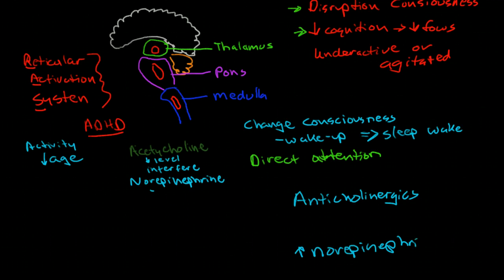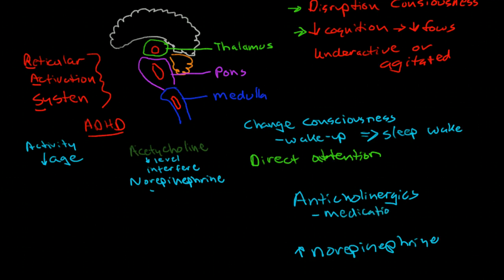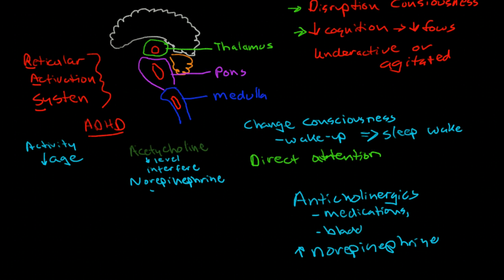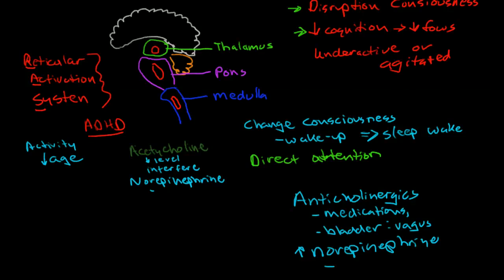There are a whole host of things that can do that, but primary is medications. Bladder infections, because irritation of the bladder actually stimulates the vagus nerve. The bladder is innervated with the vagus nerve, and that causes a vagal reflex response that causes anticholinergic activity. So elderly people with UTIs and irritation to the bladder can develop delirium. Other types of infection or inflammation or stress response.